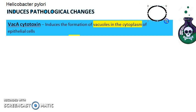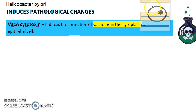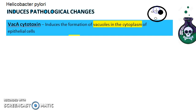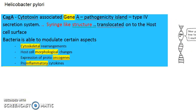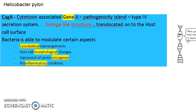In the host cell, H. pylori's cytotoxin will come and induce vacuoles — create vacuoles in the cytoplasm of the host cell. This is of course a damaging thing. That is how the VacA-type cytotoxin of H. pylori works. That's point one.